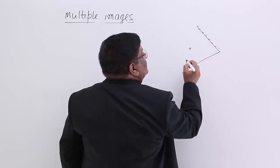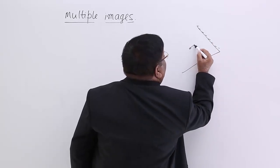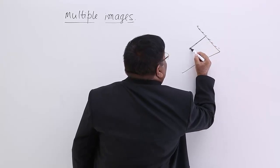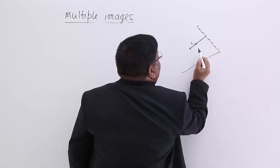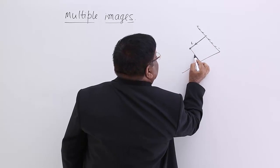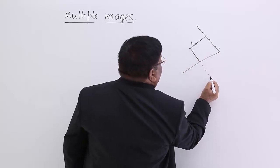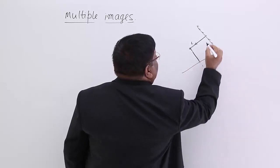Here is the object. From this object one ray goes like this and comes back like this, we see image number one. One goes like this and comes back like this, and we see that image here. This is image number two.